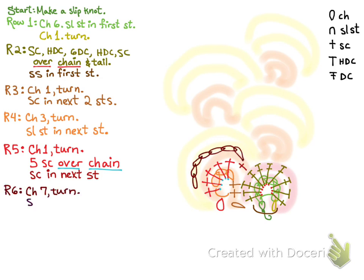For row six, chain seven and turn. And then slip stitch into the fifth stitch. And then turn.